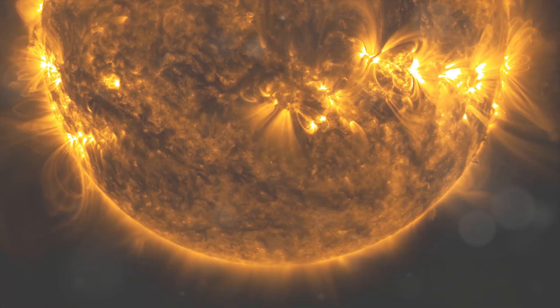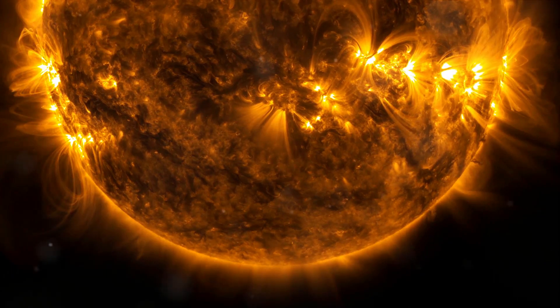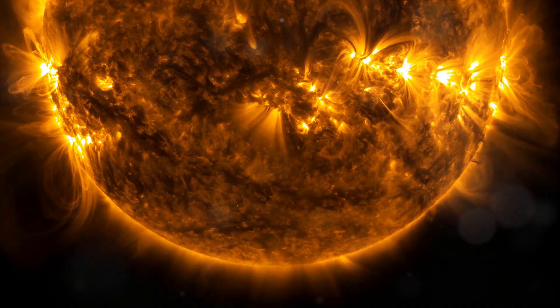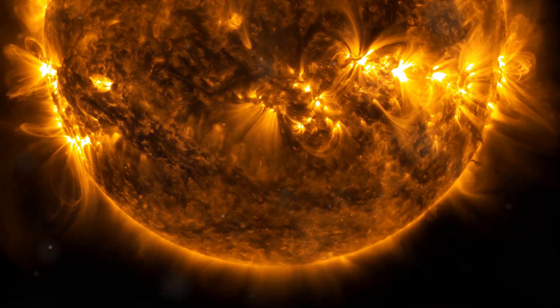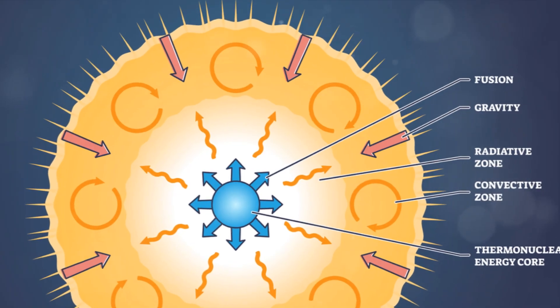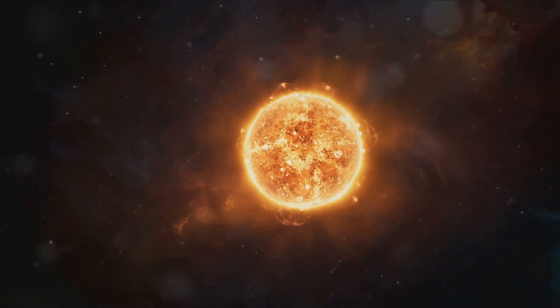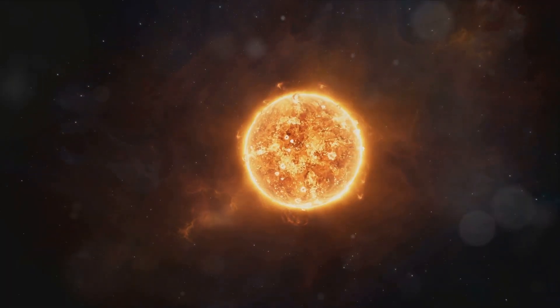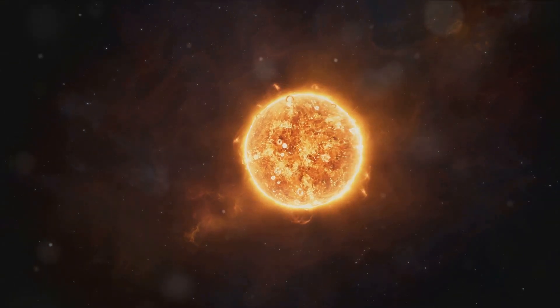Our journey begins with the sun, the powerhouse of the solar system. A blazing sphere of hot plasma, the sun is so large that over a million Earths could fit inside it. It's this colossal size and the intense heat generated by nuclear fusion at its core that makes the sun our system's central gravitational anchor.